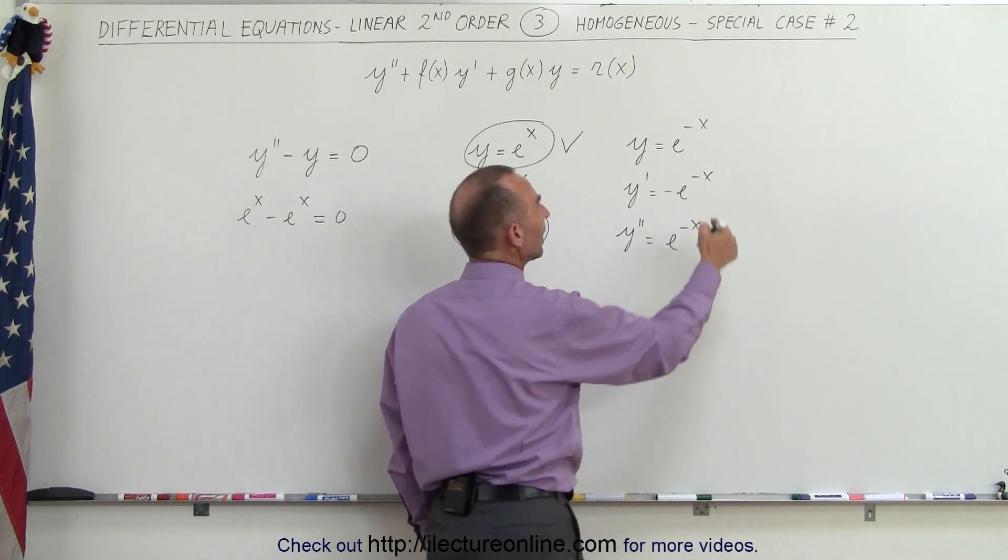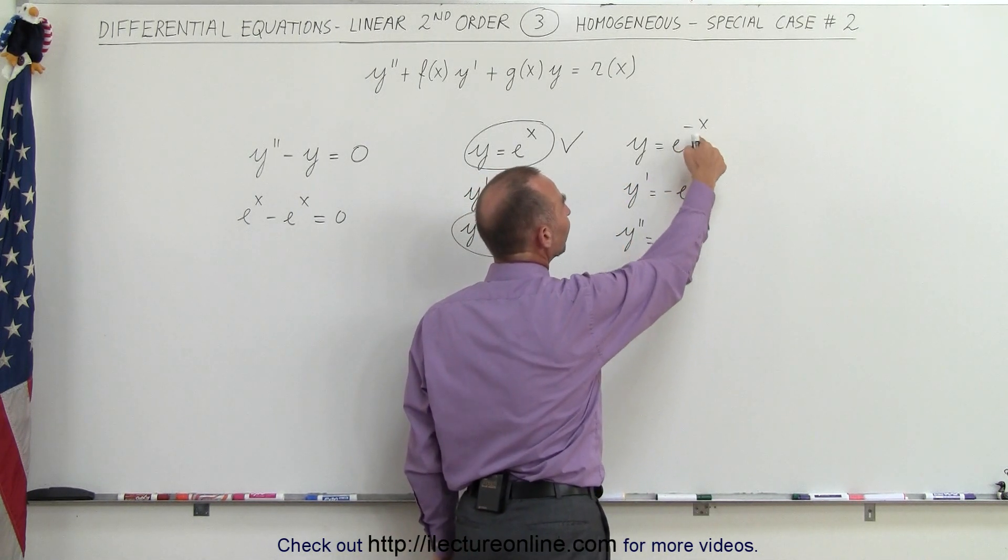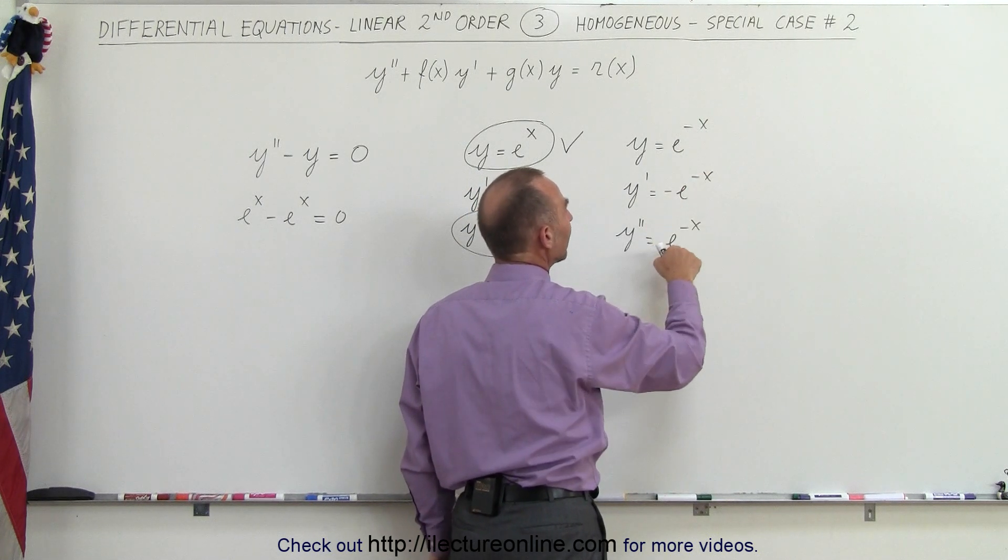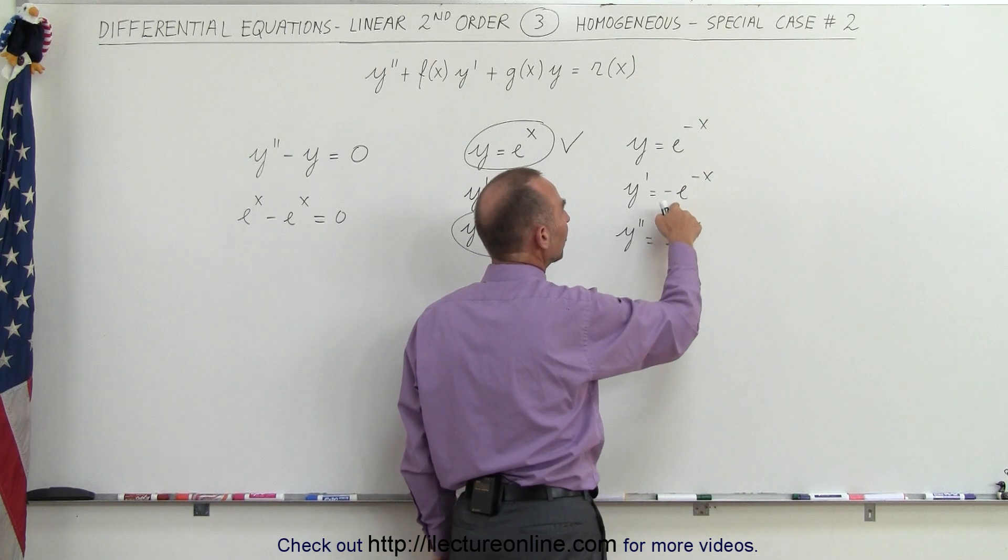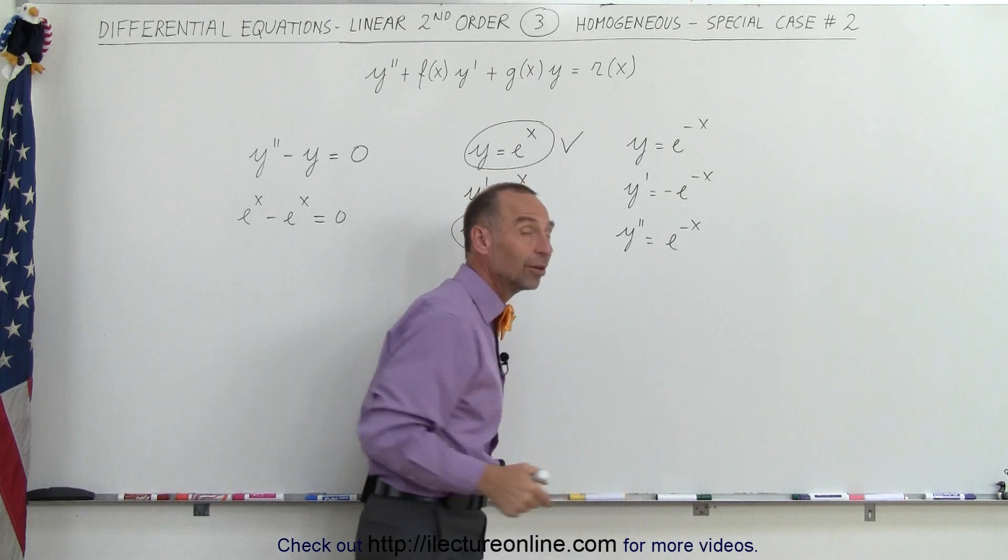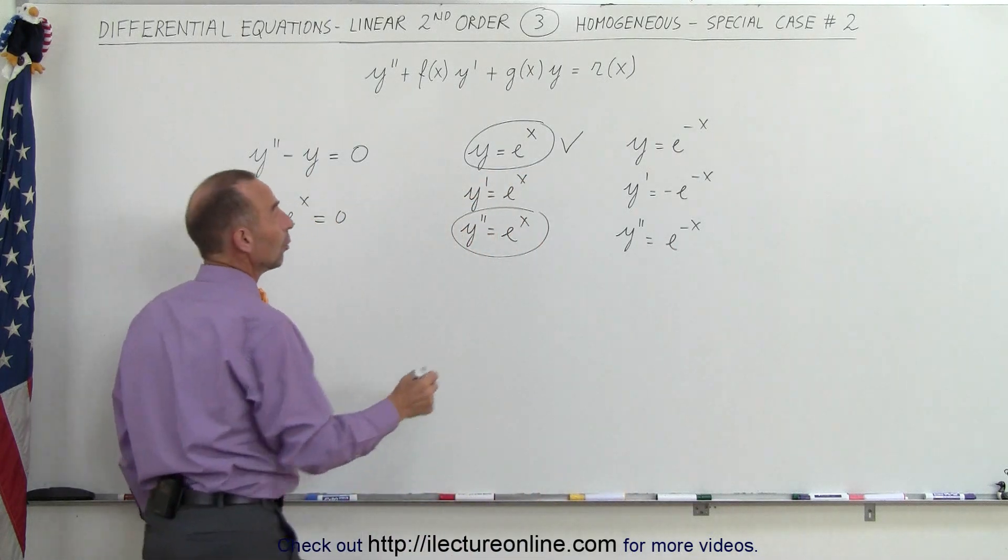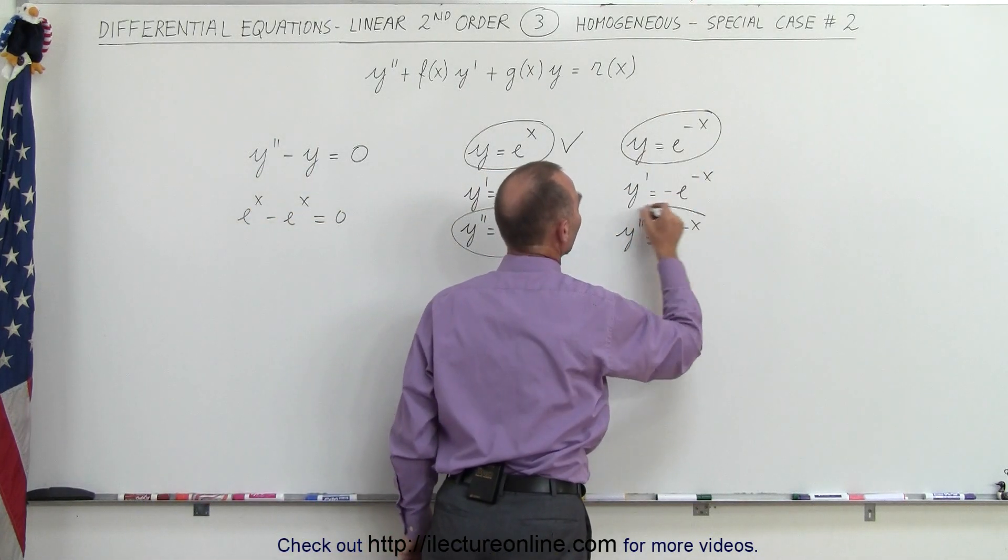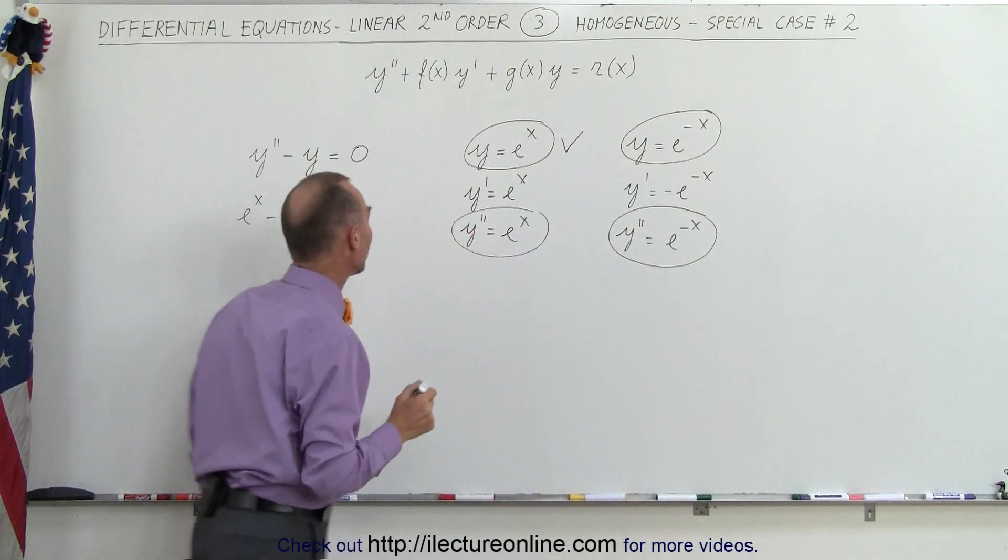In each case when you take the derivative of this you get e to the minus x times the derivative of the exponent which is minus 1. And here again you take the derivative of this which is minus e to the minus x times the derivative of the exponent which is minus 1. Minus 1 times minus 1 gives you plus 1 again, and because of that when you plug in this for y and this for y double prime notice what you get.